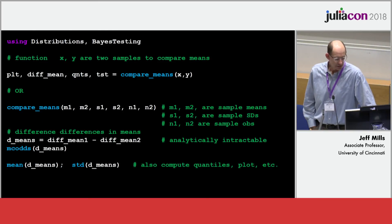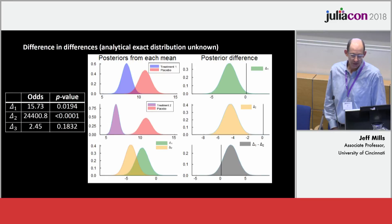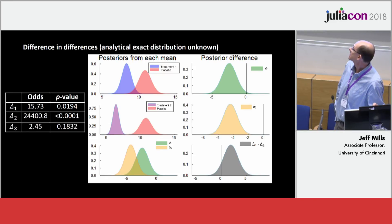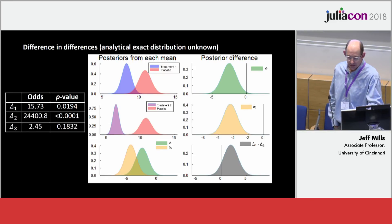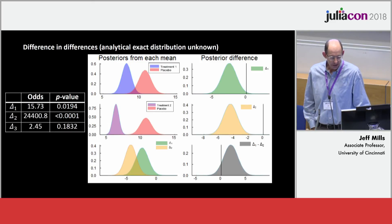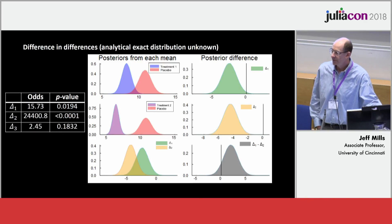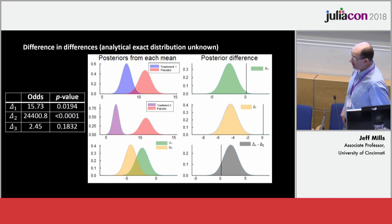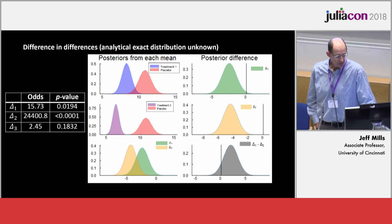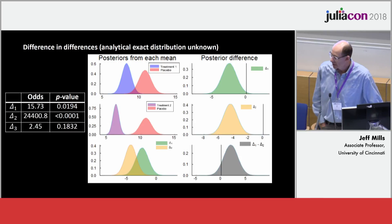For comparison of means, there's a function where you give it two samples or summary statistics. The results show a treatment versus placebo at the top with the density of the difference on the right, then a second treatment in the middle, and we can do a difference of the differences — comparing the average treatment effect relative to placebo for two different treatments. Odds ratios and matching p-values are shown to demonstrate that they compare well.